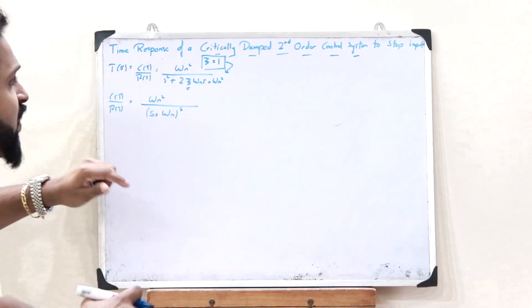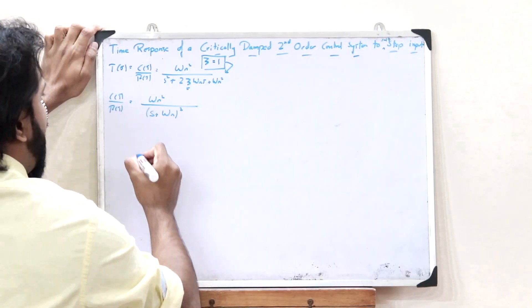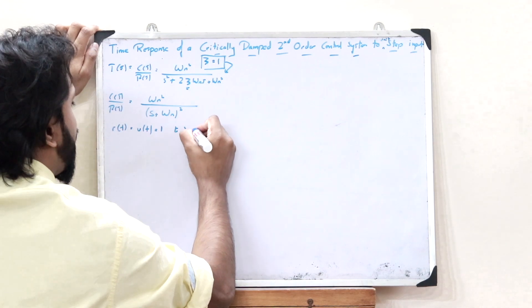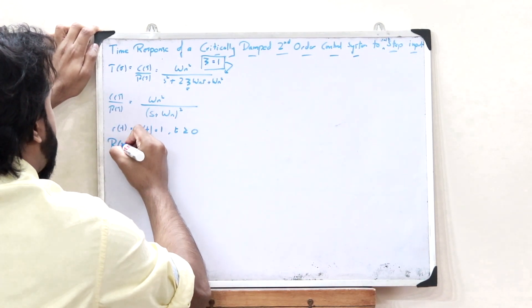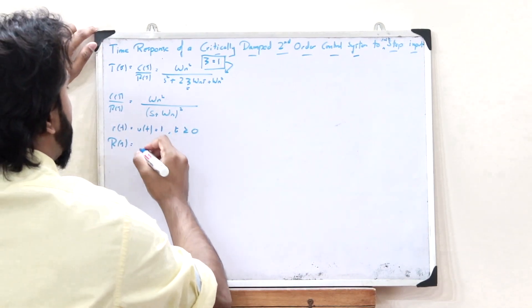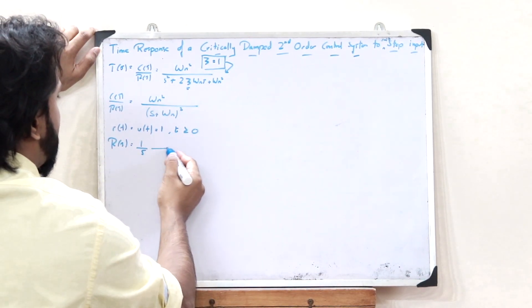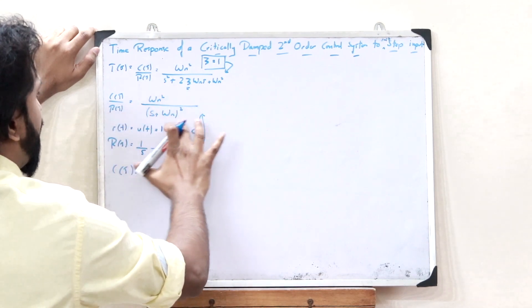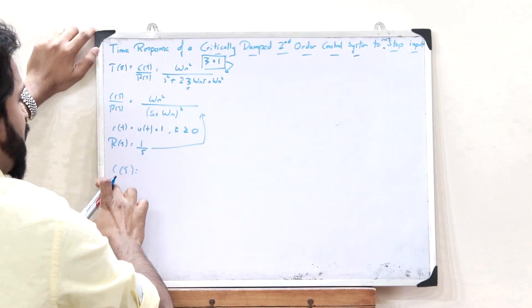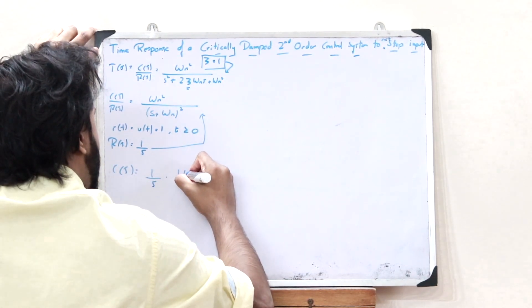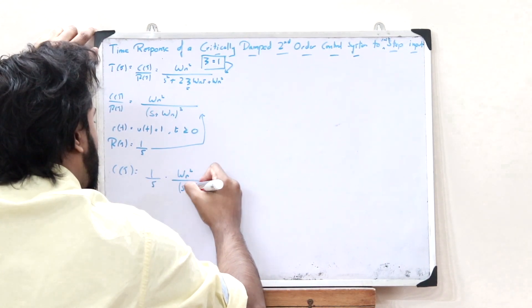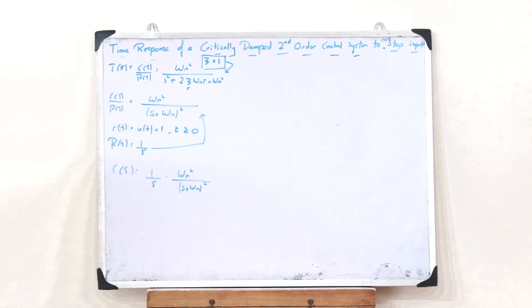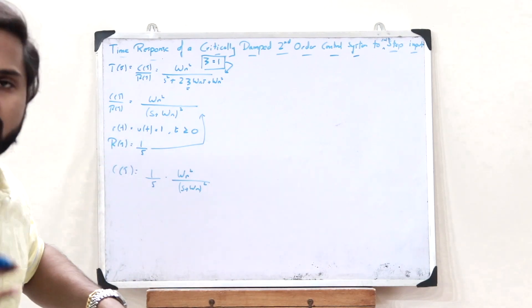Now, in order to find the time response, we are giving a unit step signal as the input. The input R(t) is a unit step U(t), which equals 1 for all values of t greater than or equal to 0. Therefore, R(s) is the Laplace transform of R(t), which is 1/s. Upon substituting this, we get C(s) = (1/s) × omega_n squared / (s + omega_n) squared.